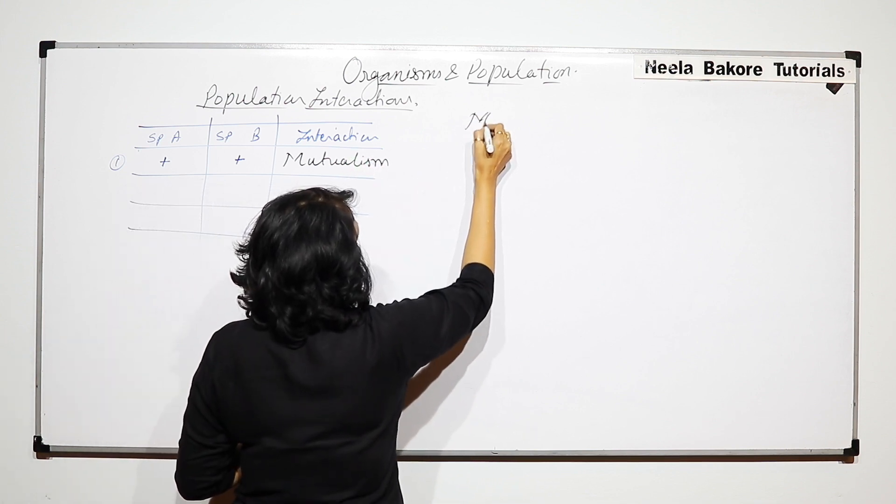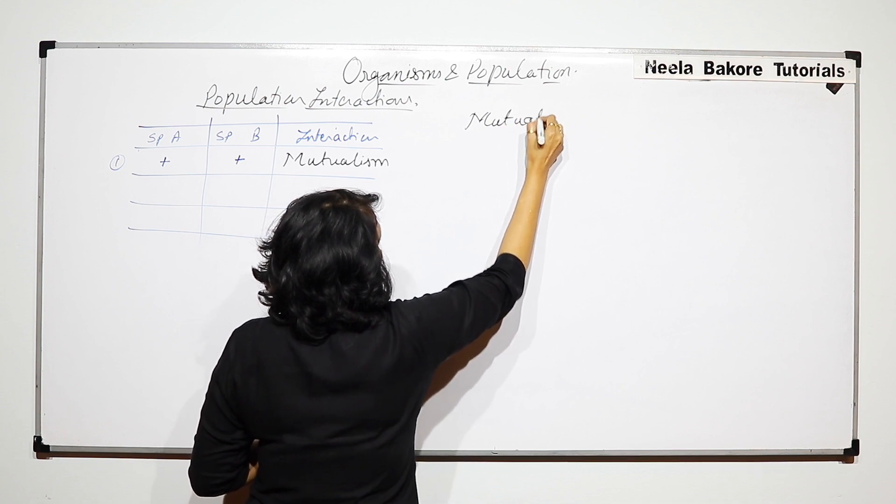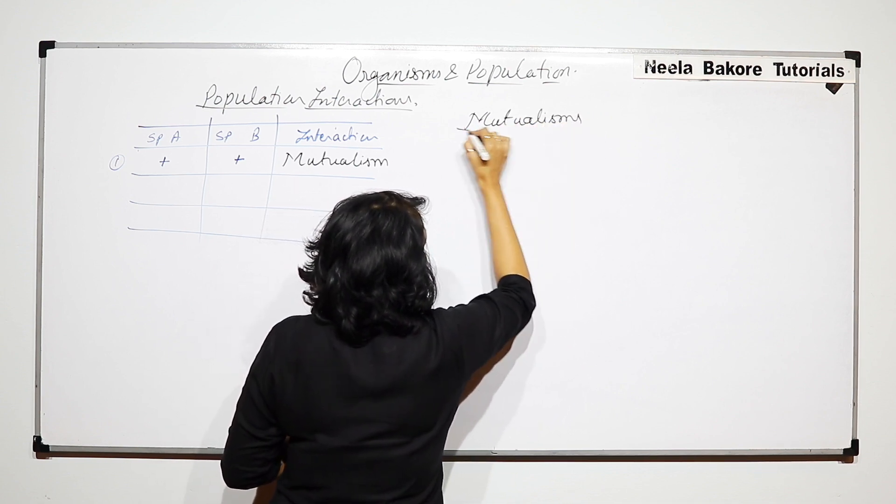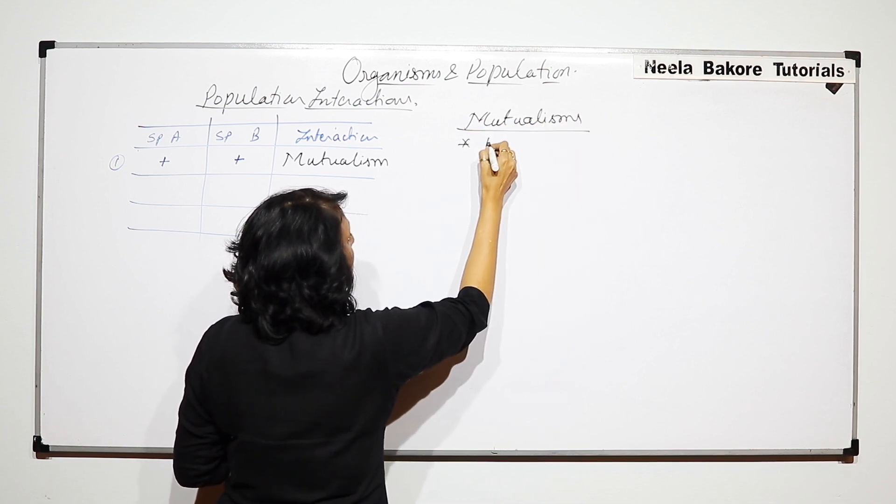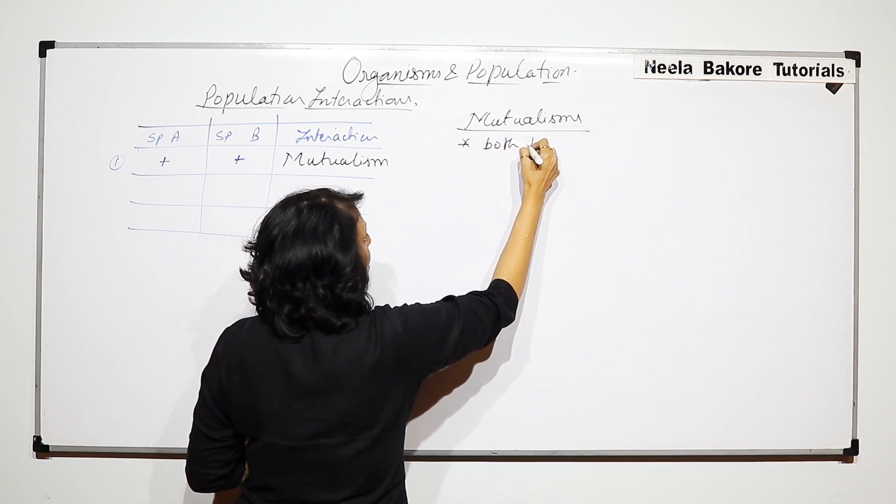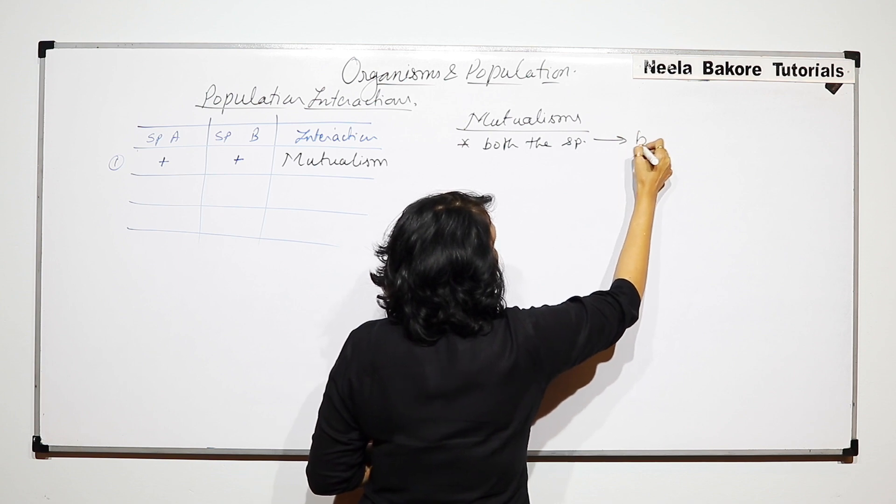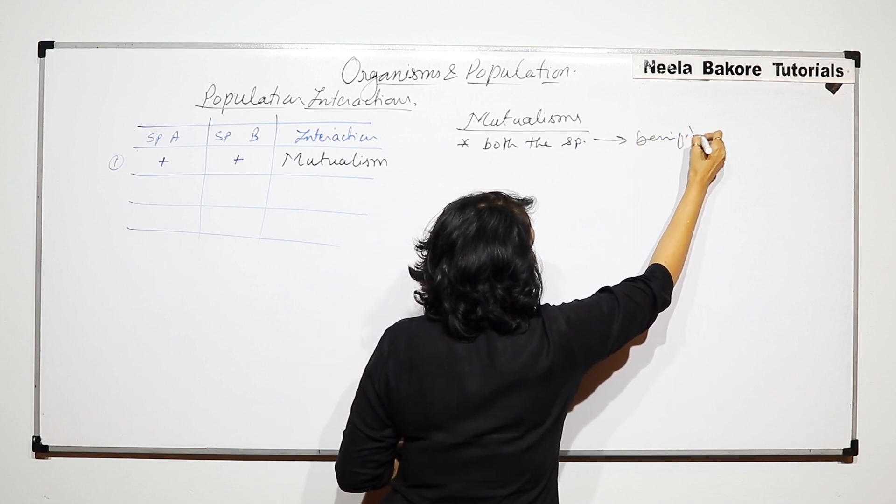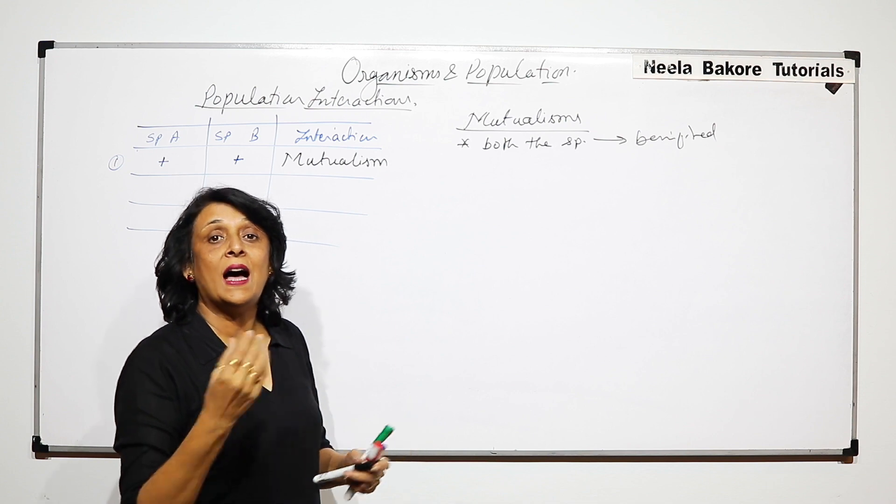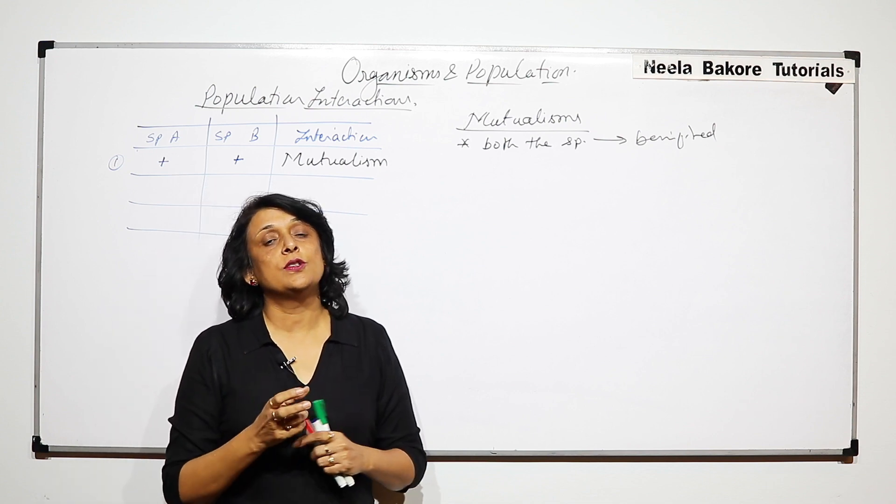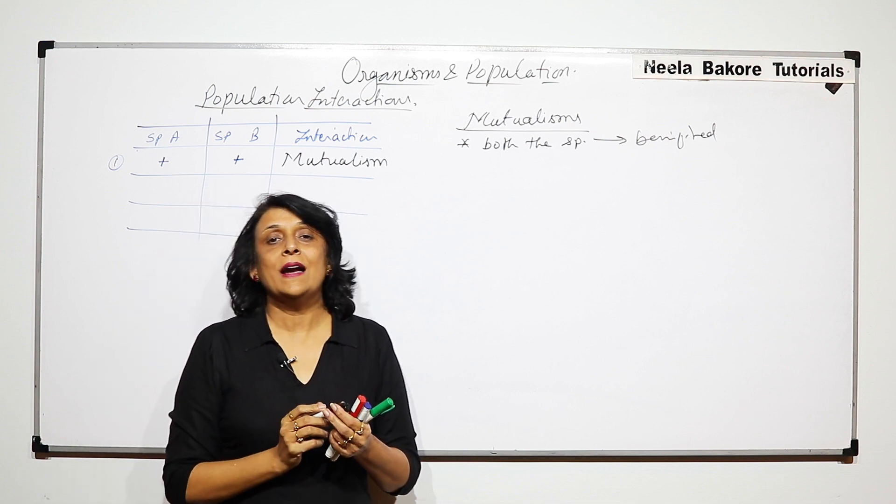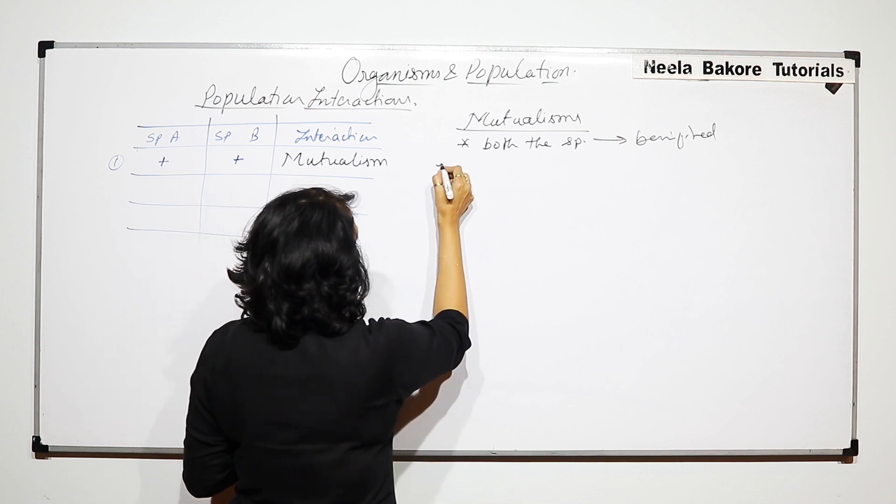So here we are talking about mutualism. In mutualism, both the interacting species are benefited. That means they get benefit from the other species with which they are interacting. To understand this, we will take some examples.